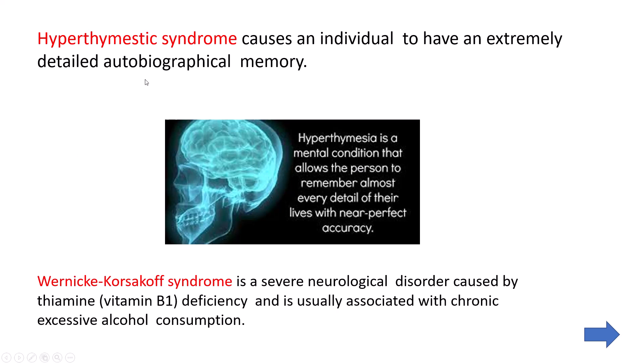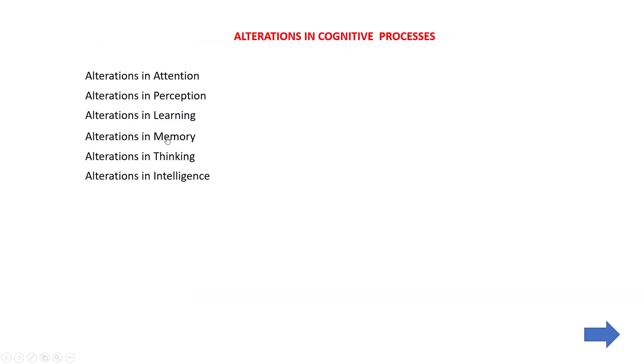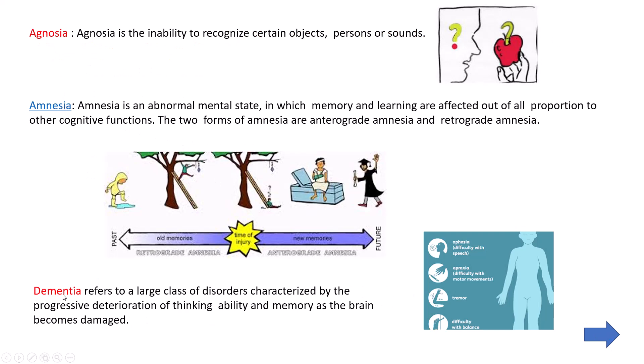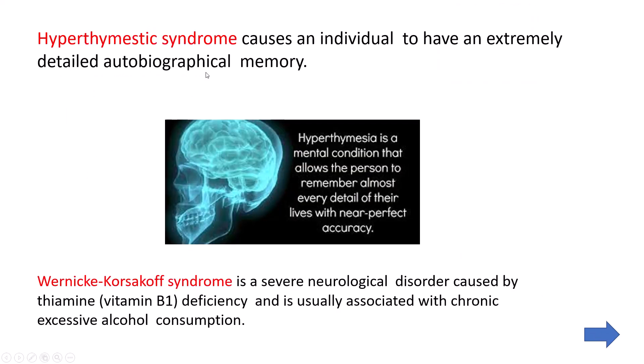So five things are seen in memory: agnosia, amnesia, dementia, hyperthymesia syndrome, and Wernicke-Korsakoff syndrome. Hyperthymesia syndrome is a mental condition that allows a person to remember almost every detail of their life with near-perfect accuracy. It looks like a gift, but it actually becomes a curse because our brain normally has the ability to forget unwanted things — but these people remember everything, which becomes a disorder.